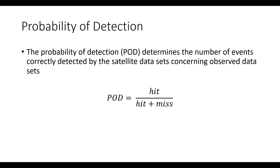Probability of detection is the number of events that a satellite rainfall dataset is able to predict correctly, mostly based upon the observed dataset. Let's say there are 100 days where hits are 90 and misses are 10 — the total number of observed rainfall days is taken into consideration. The formula is: hits divided by (hits plus misses), which gives the total number of observed rainfall data. If the probability of detection is near to 1, the data is doing pretty good; near to 0 means it is bad.